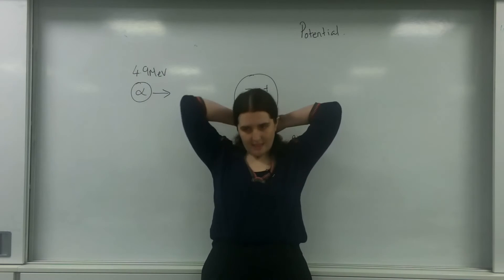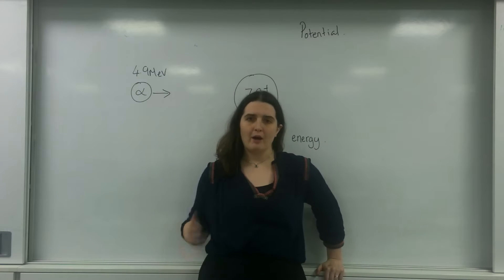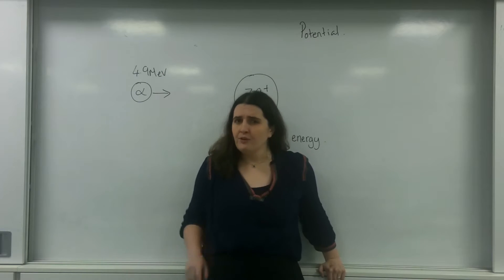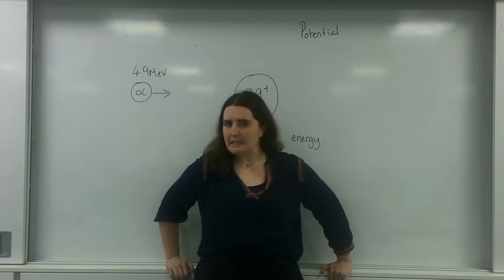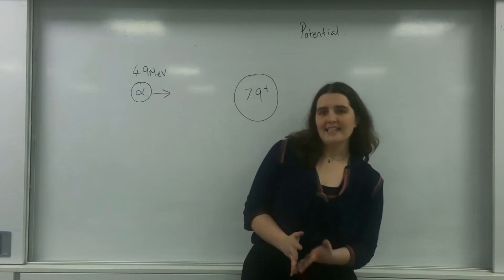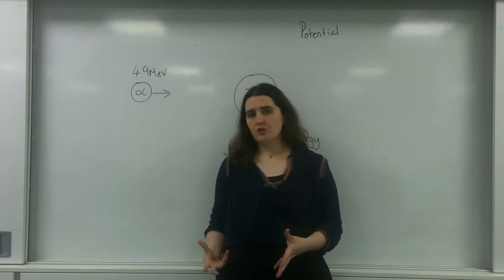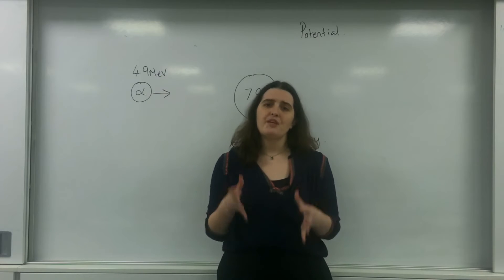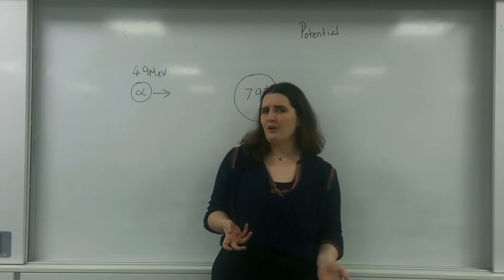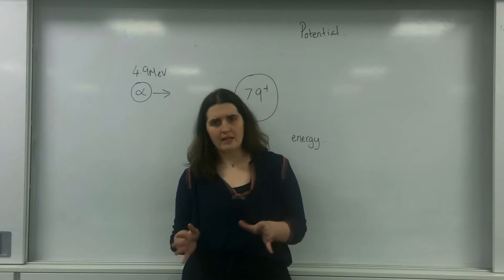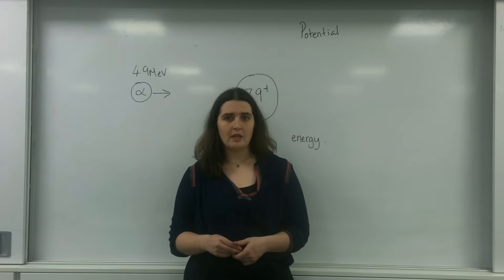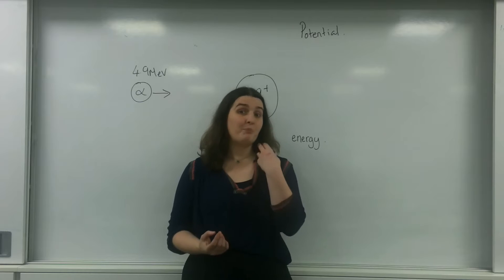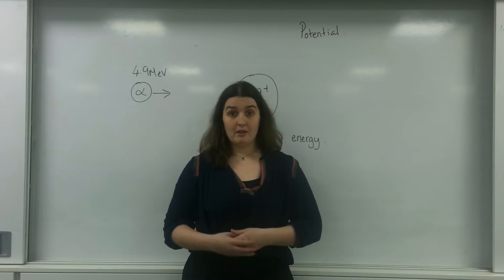Good evening and welcome to TL Physics. Today I'm going to talk about atomic radius and how to find it using the closest approach method. This method was the original way that we estimated the atomic radius of an atom. It's all about firing a positively charged particle at the nucleus of the atom and hypothesising how close it would get. This is useful not only for nuclear physics but for electric fields as well.